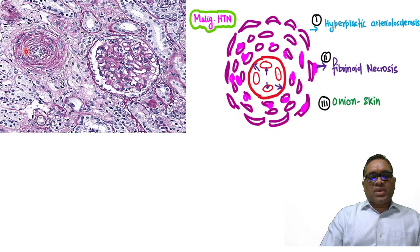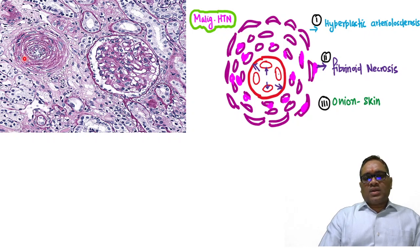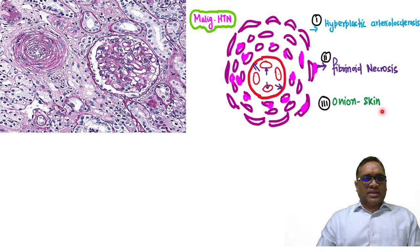You can observe the same in this malignant hypertension kidney. There is a pink color material along this wall - that is fibrinoid necrosis. And these are all hyperplasia of the smooth muscle, which is hyperplastic arteriosclerosis. This overall appearance gives rise to onion skin appearance.